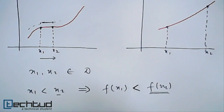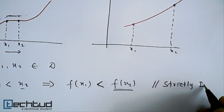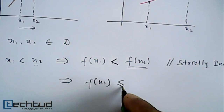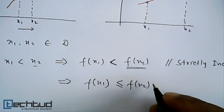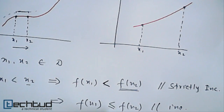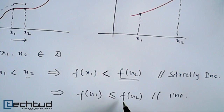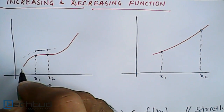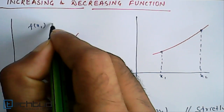If this condition always holds strictly, then it is strictly increasing. But for the same situation, if we have f(x1) which can be either less than or equal to f(x2) — meaning the value may increase or be equal — then it is just increasing, not strictly increasing. Strictly increasing means it is always increasing, whereas just increasing means it is increasing or equal.